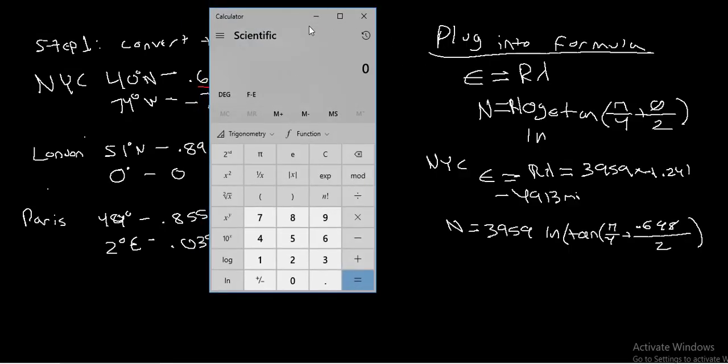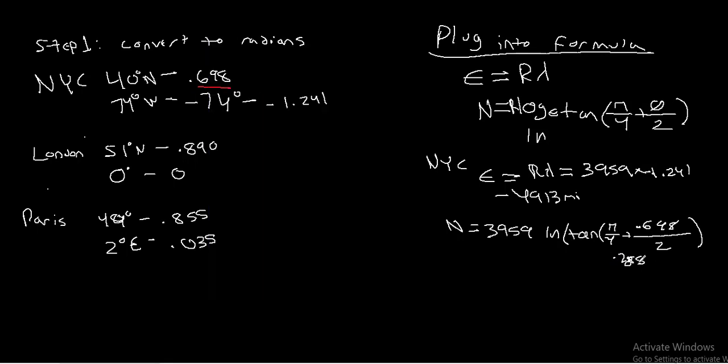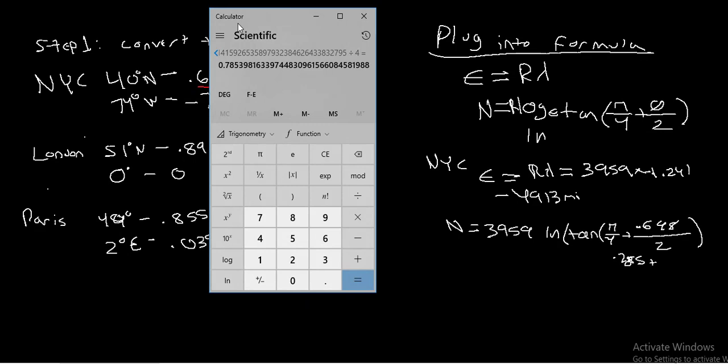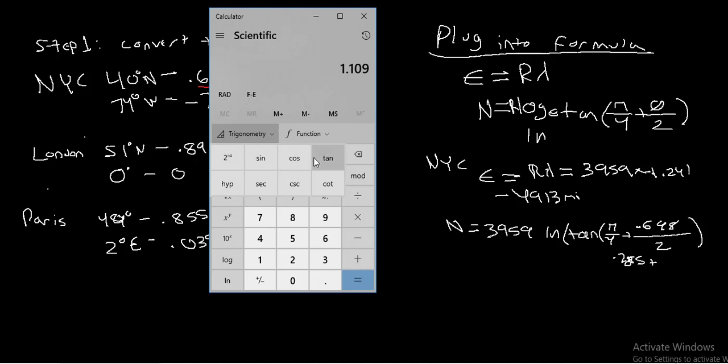If we bring up our handy-dandy calculator, clear whatever we were working on before. If we do pi over 4, we get 0.785. Then 0.648 divided by 2 is 0.324 plus 0.785. And we take the tangent of that, making sure that we're in radians. Take the tangent of that, and then we take the natural log of that. And then we multiply that by 3,959 to get 2,763 miles.